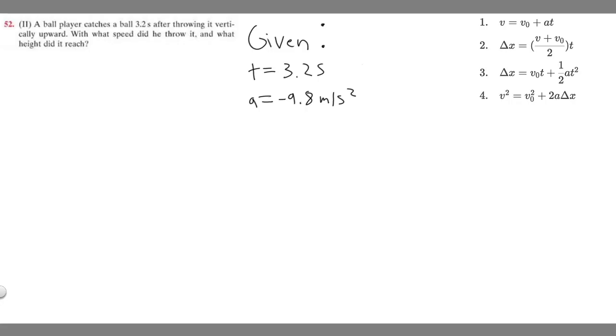So we have acceleration, we have time, and what else do we know? Well, we know that what we're trying to find first is with what speed did he throw the ball. So what we're going to do is set V, the final velocity, equal to 0. So 0 meters per second.